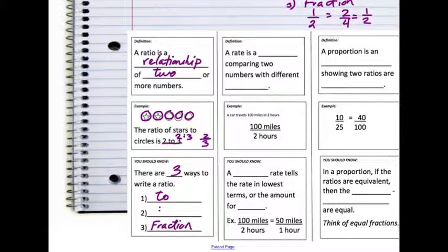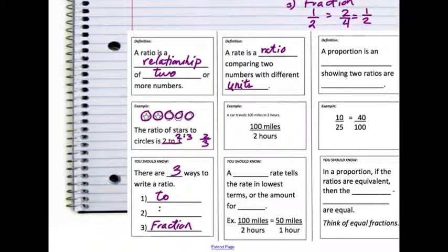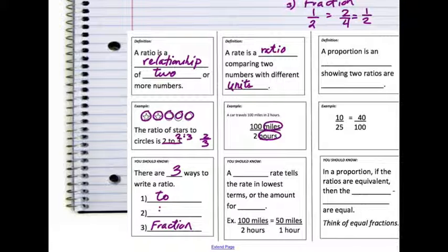A rate is a ratio, but it compares two numbers with different units. For example, a car travels 100 miles in two hours — miles is the first unit, and hours is the second unit. I'm not comparing miles to miles, or hours to hours; I'm comparing miles to hours. There are two different units here, so it is a rate.